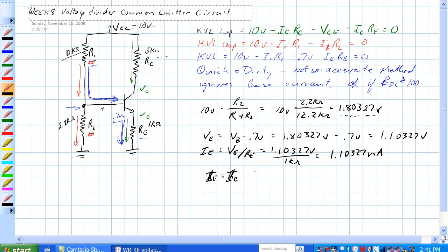The voltage drop across RC is equal to IC times RC, which equals 5.409 volts.